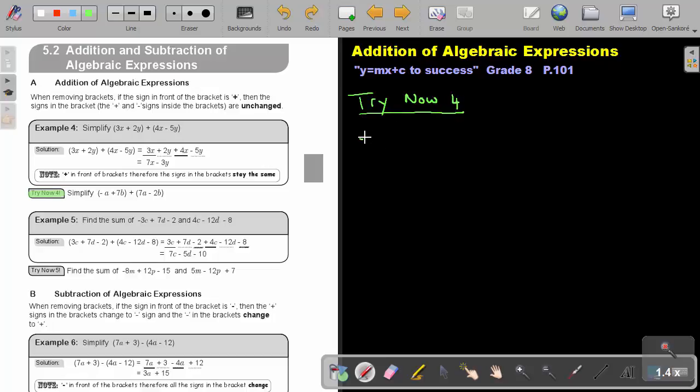If I say negative A, put first the brackets, plus 7B plus 7A minus 2B. Okay. Let's first remove the brackets. There's just a 1 in front and there's a 1 in front and there's a positive. So basically I can just rewrite everything.